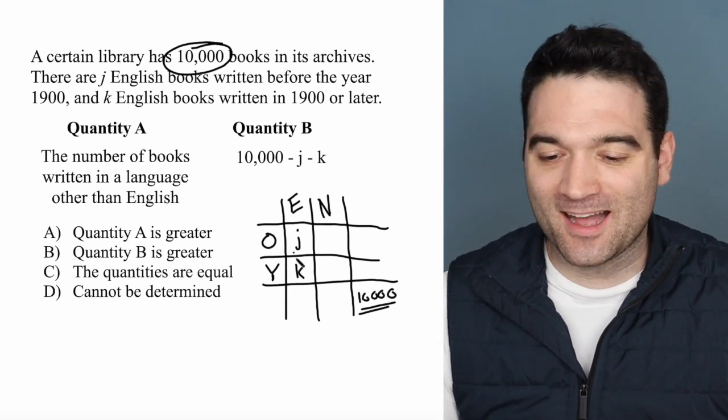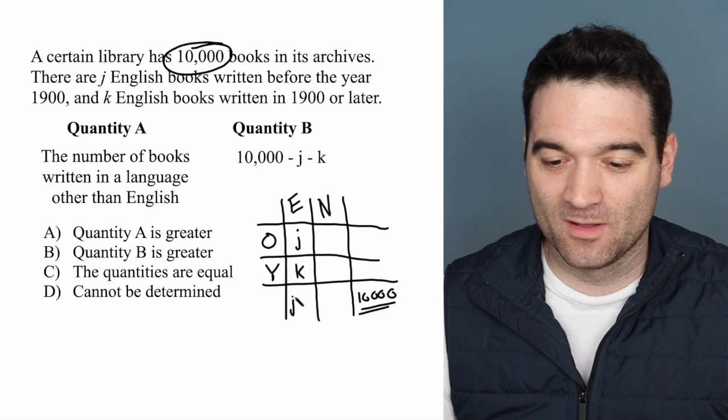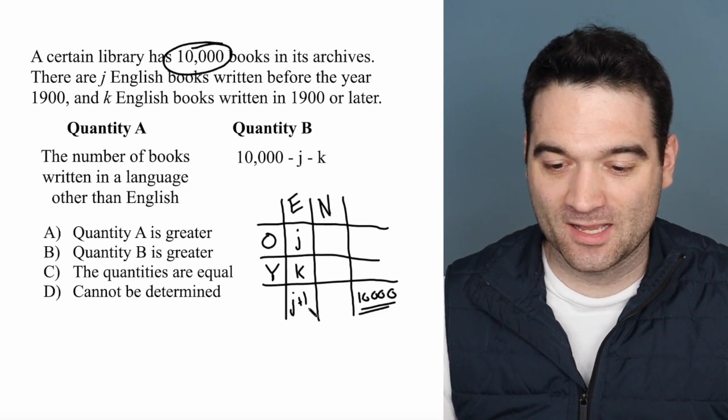So this column, when you add these two together, has to equal J plus K.